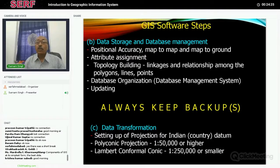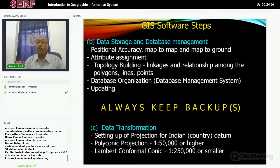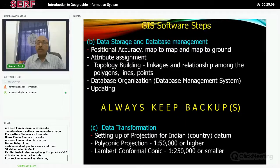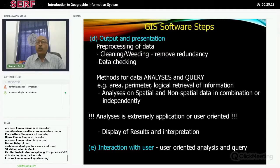The second step is to store the data — choose a proper database management system; nowadays relational database management systems are widely available. Once digitized, the next step is attribute assignment: topology building, which defines the relationship of a polygon with its neighboring polygons — what is on the left side of a vector and what is on the right side. Then run polygonization so all polygons become coherent units. Always take backups. Data transformation between different projection systems is a very good potential of GIS. Then comes output and presentation, requiring pre-processing, cleaning, and error checking.